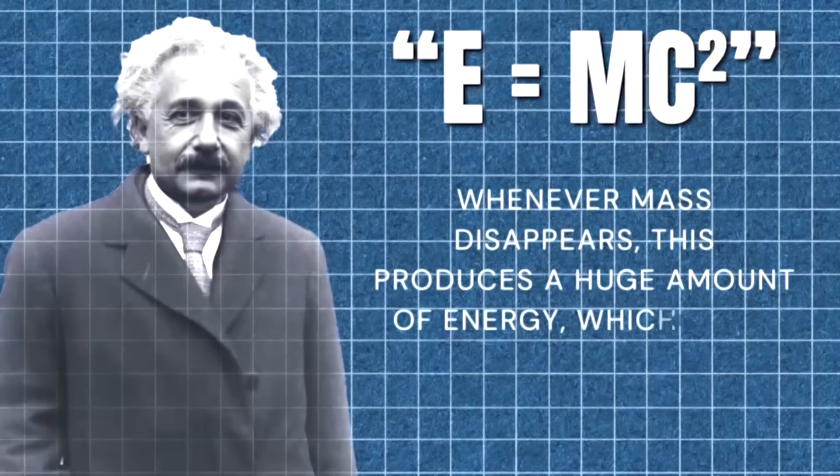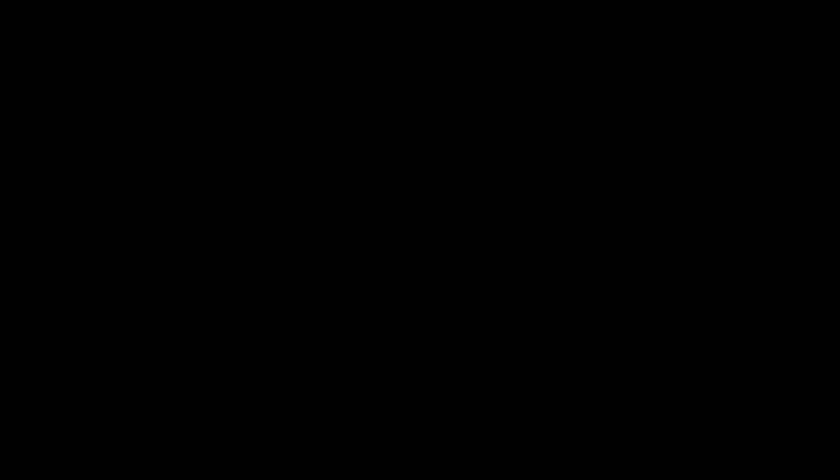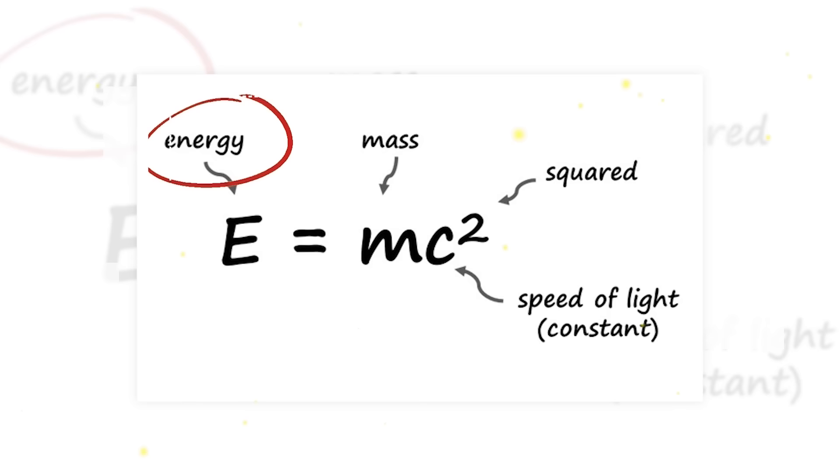This mass difference is converted into energy according to Einstein's famous equation, E equals M times C raised to the power of 2, where E is the energy, M is the mass, and C is the speed of light.